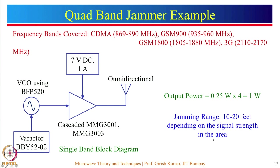This is how a jammer can be implemented using circuits already studied in the class — the VCO circuit and the MMG 3001 circuit. Simply connecting all these systems along with the antenna, which we have also studied, and properly connecting them together achieves the functionality of a jammer.